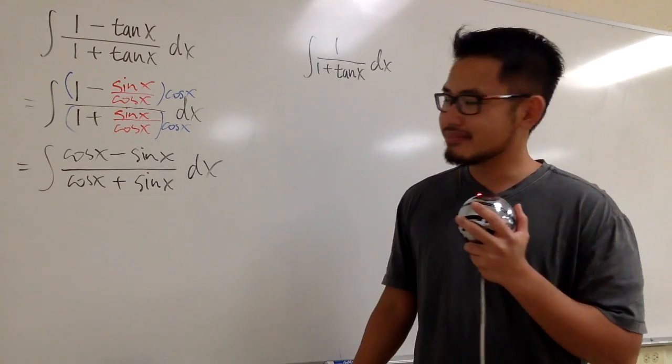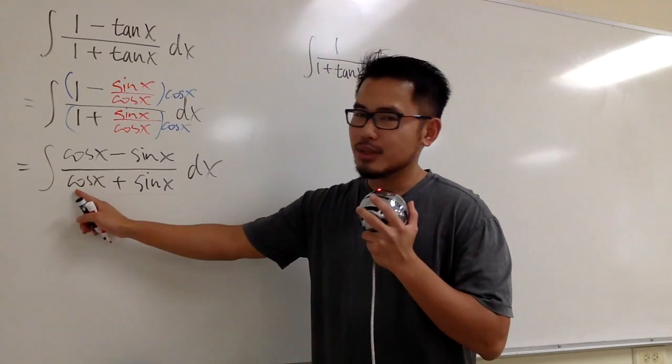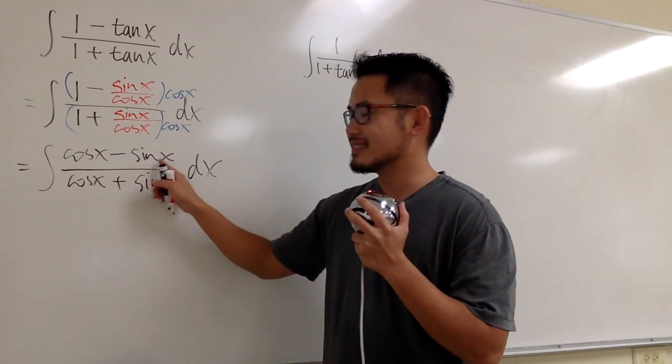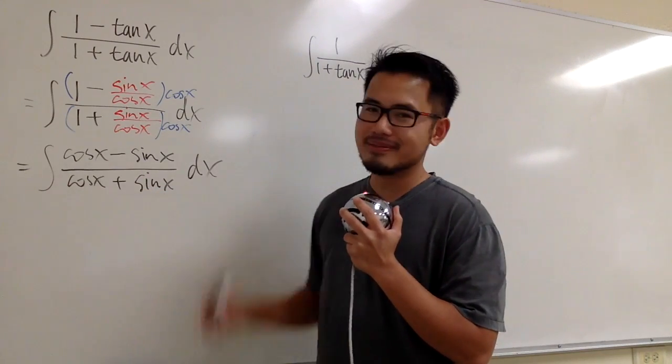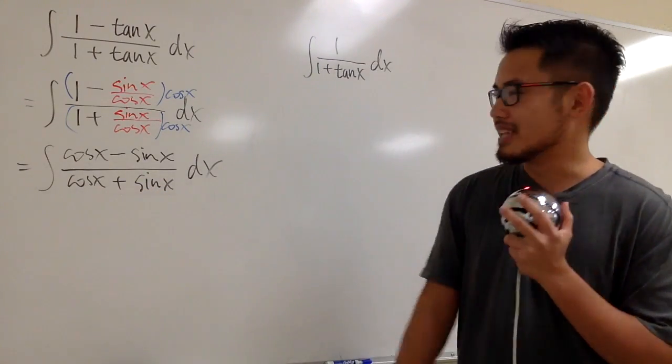And now what? Well, look at the denominator here. What's the derivative of cos x? It's negative sin x. Aha! Right here. What's the derivative of sin x? Positive cos x. Aha! Right here. So we can use u sub that one, right?